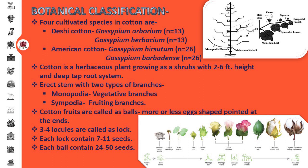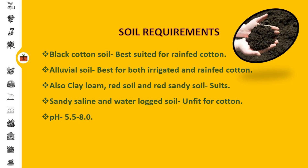Cotton has an erect stem with two types of branches: monopodial and sympodial. Monopodial are vegetative branches and sympodial are the fruiting branches. The fruit of cotton is called bolls. These bolls are more or less egg-shaped and pointed at the ends. Each boll contains three to four locules called locks. Each lock contains seven to eleven seeds, and each boll contains 24 to 50 seeds.